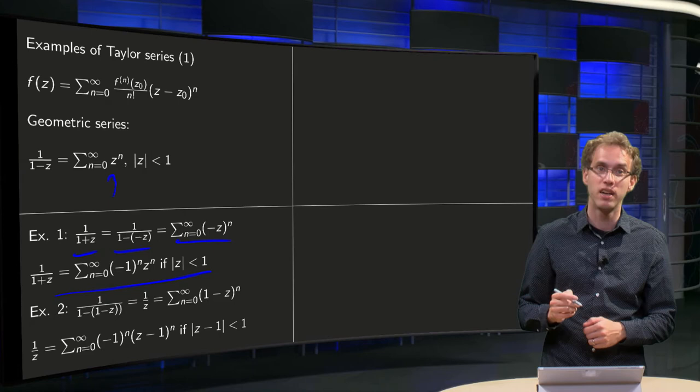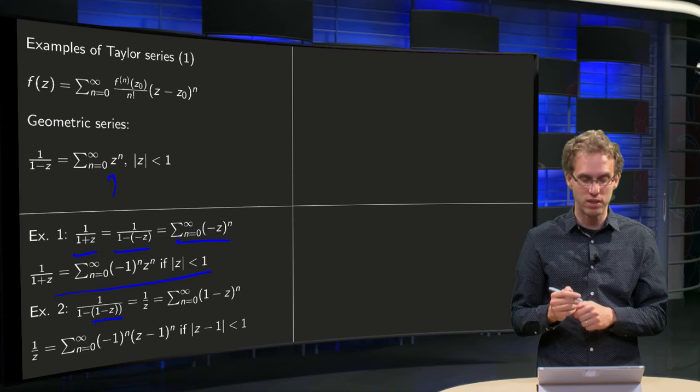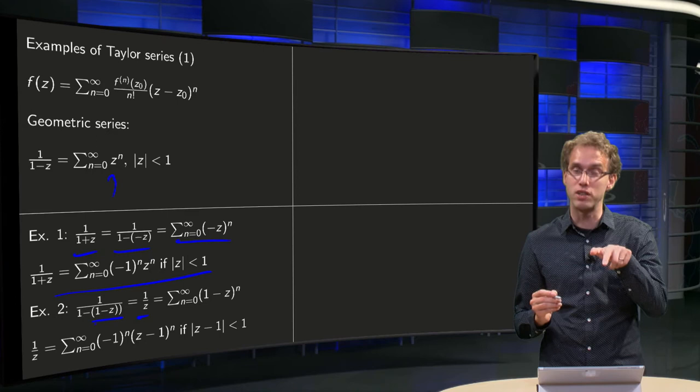Then we get 1/(1-(1-z)) equals 1/z. Because the 1 minus... sorry, 1 minus 1 cancel out.